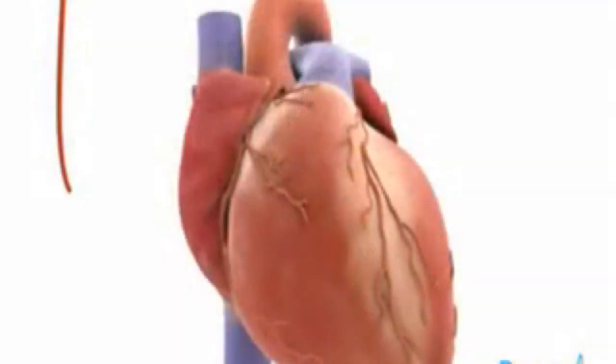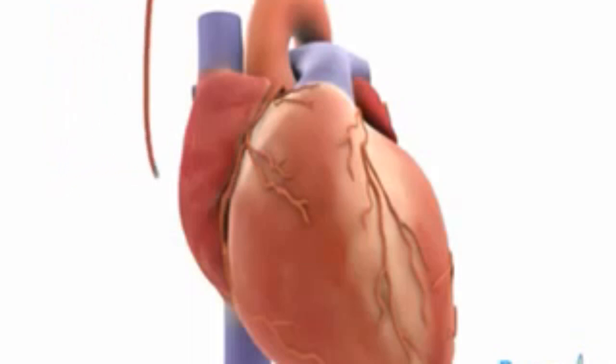The surgeon may attach the new grafts while the heart is still beating, but it's more common for medication to be used to temporarily stop the heart. The blood is then rerouted to a heart-lung bypass machine, which takes over from the heart and lungs, adding oxygen to the blood and maintaining circulation.